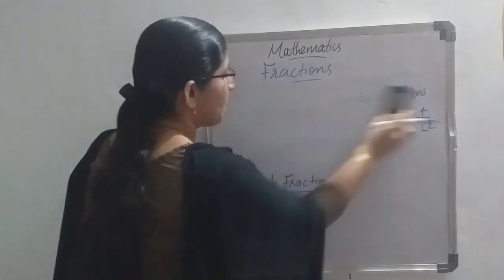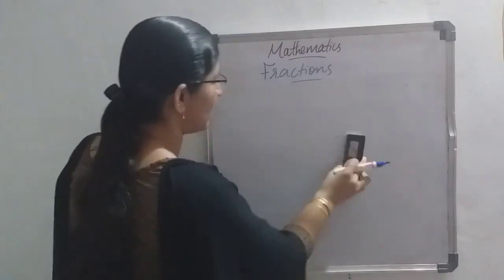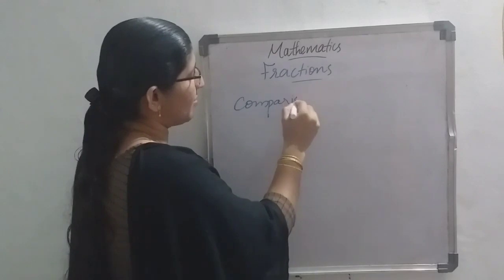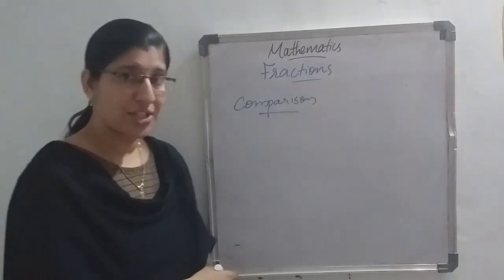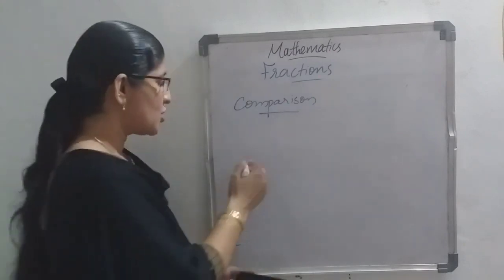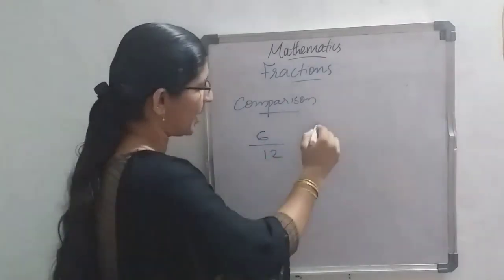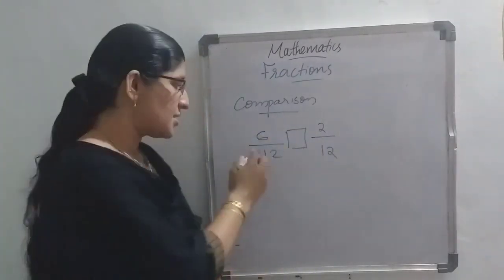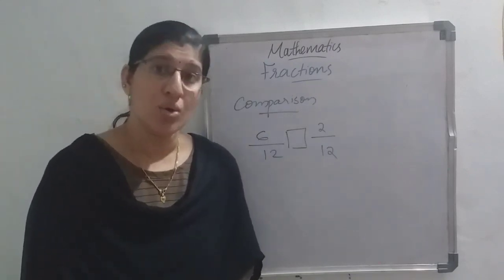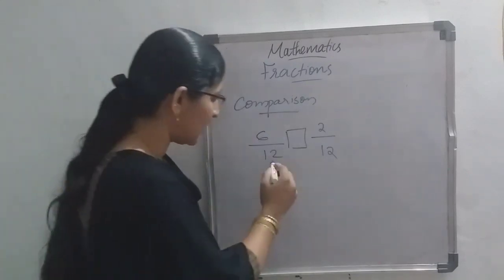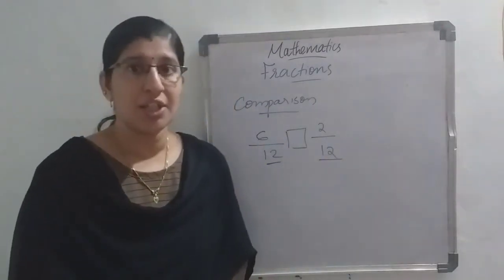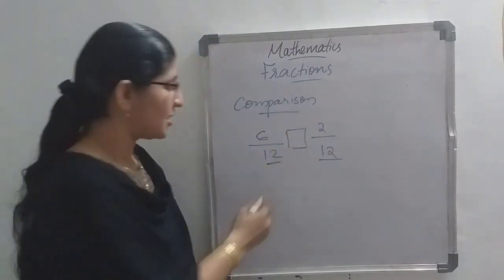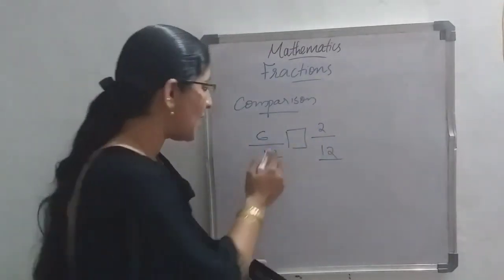Next we are going to study the comparison of like fractions. Like fractions means whenever the denominators are the same. For example, 6 by 12 and 2 by 12 — you need to compare these two fractions. Here the denominators are the same, so you need to compare only the numerators.